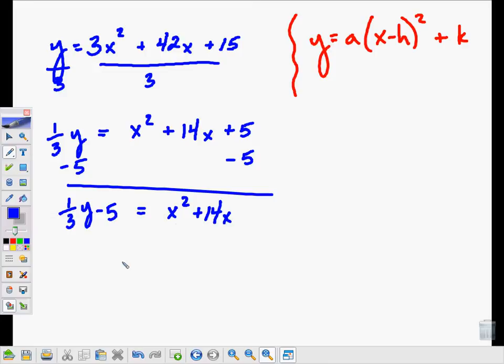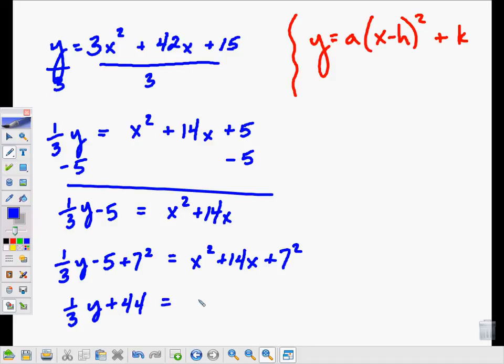Now I practice the method of completing the square on the right-hand side, just like we did with solving equations. I will take half of my b term, half of the 14, which is 7, and square that. I will stick that onto both sides. So the left-hand side becomes 1 third y minus 5 plus 7 squared equals x squared plus 14x plus 7 squared. The left-hand side then is 1 third y, and this is minus 5 plus 49, so that is plus 44, equals, and on the right-hand side we have a perfect square, x plus 7 quantity squared.